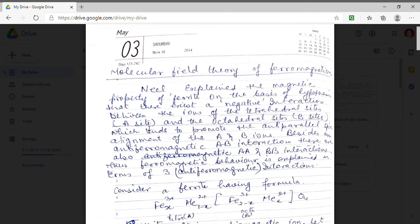Then such an uncompensated anti-ferromagnetism is termed as ferrimagnetism. Now what we are going to discuss today is their molecular field theory. This theory was proposed by Neil.